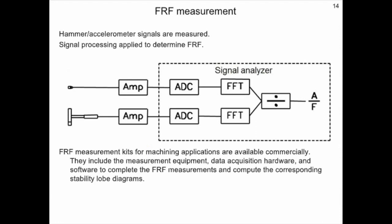In order to measure a frequency response function, we first measure the accelerometer or vibration and hammer or force signals using a signal analyzer. As shown in the schematic, there are amplifiers which amplify the acceleration and force signals. Then an analog to digital conversion step is used to sample the data. This time domain data is converted into the frequency domain using the Fourier transform or FFT and then those two signals are divided in order to give the frequency response function. Frequency response function measurement kits that includes the required hardware and software are available commercially.